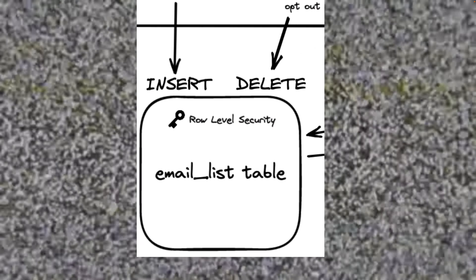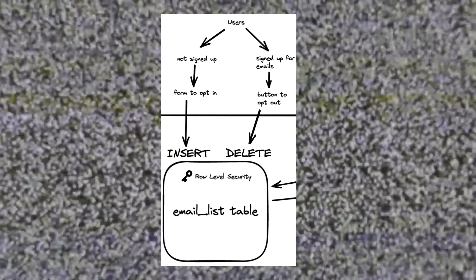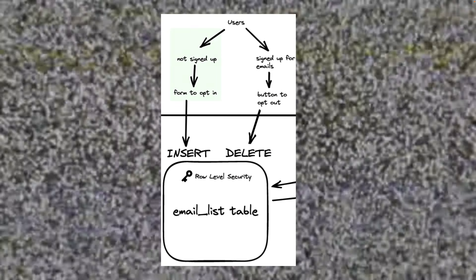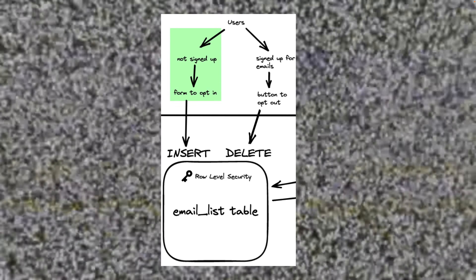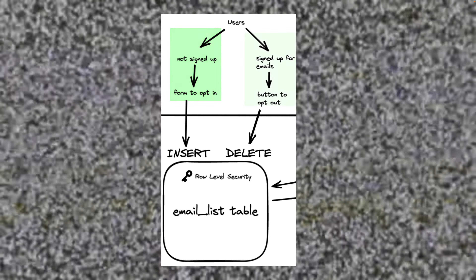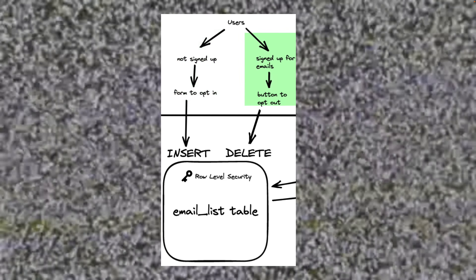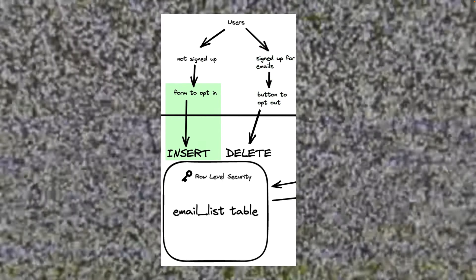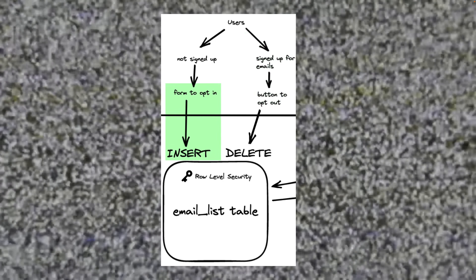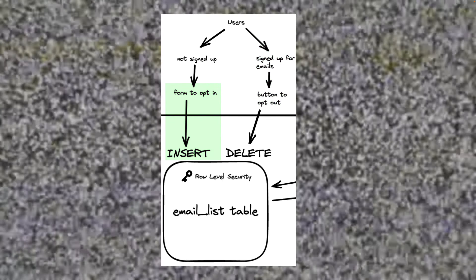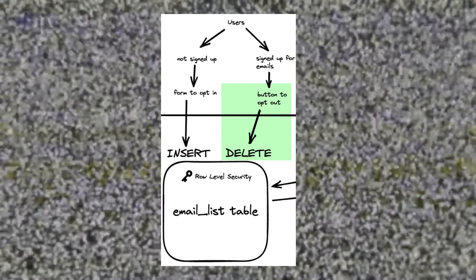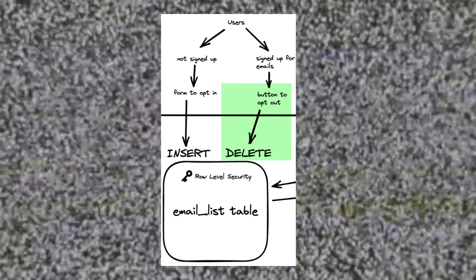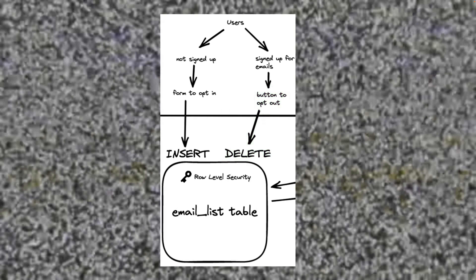Next, we'll jump over to the front end side where our normal users will go through a simple flow where if they're not signed up, they'll see a form to opt in. And if they are signed up, they'll see a button to opt out. When they fill out the form, they'll be inserting into our table. And when they click the button to opt out, they'll just be performing a delete operation on that table.